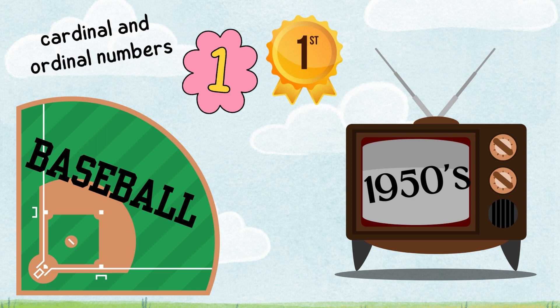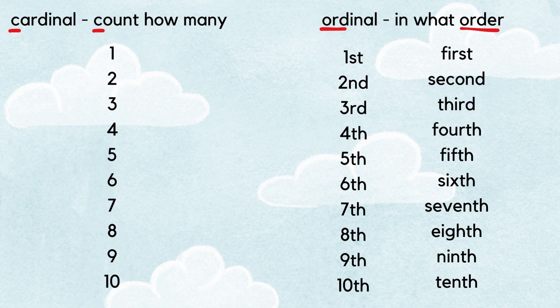Cardinal numbers are when you're counting how many. Notice that 'cardinal' and 'count' both start with C. You use cardinal numbers when you count how many — so like, how many clouds are on this page? One, two, three, four — four clouds. You use ordinal numbers when you're talking about in what order the items are: first, second, third, fourth, fifth, sixth, seventh, eighth, ninth, tenth.